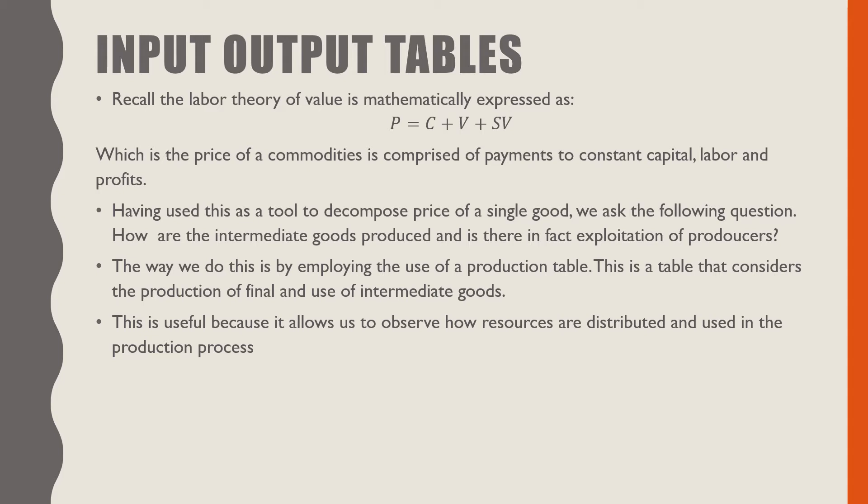The way we do this is by employing the use of a production table or input-output table. This table considers the production of final goods and the use of intermediate goods in production. This is useful because it allows us to observe how resources are distributed and what resources are used in the production process.